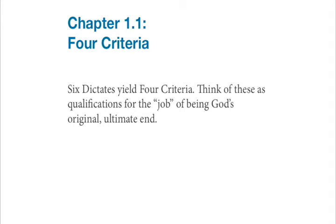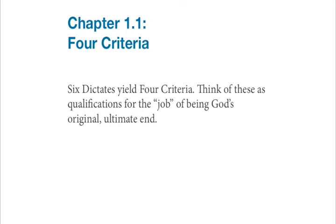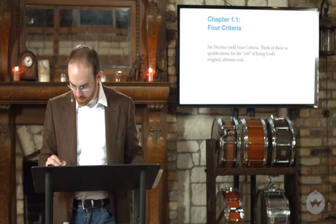Edwards has six dictates of reason — six steps in an argument. From these six steps, he groups a couple together so we end up with four criteria. Think of these as qualifications for the job of being God's original ultimate end. We're looking for this original ultimate end — most valuable, before creation. What must it be? How do we know if we've found it? He's going to argue for each of these four criteria.